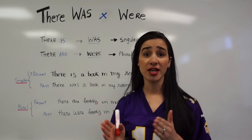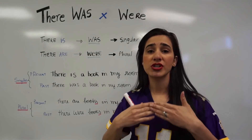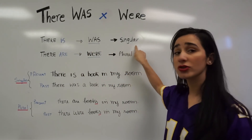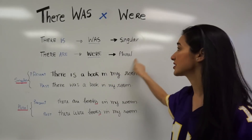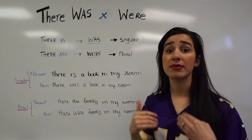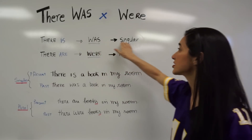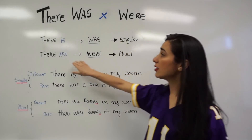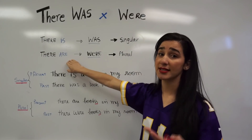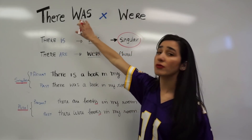If you understand 'there is' and 'there are,' you're going to understand this class really easily. We use 'there is' and 'there are' when we want to say that something exists. 'There is' is for singular and 'there are' is for plural — that's the present. When we want to talk about the past, we use 'there was' for singular and 'there were' for plural.